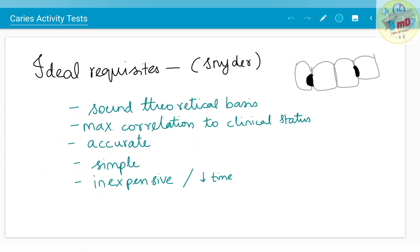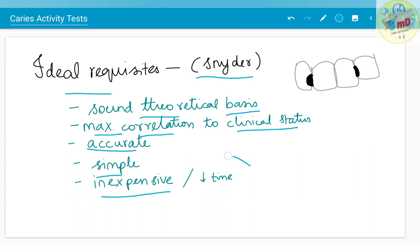According to the science proven till now, though caries is a multifactorial disease, the role of bacteria is important. Many caries activity tests have been developed. The ideal requisites according to Snyder are: it should be based on a sound theoretical basis, not an assumption; it should maximally correlate with the clinical status; if the test predicts high susceptibility, the oral cavity should show a lot of caries. The test should be accurate, simple, inexpensive, and take less time.